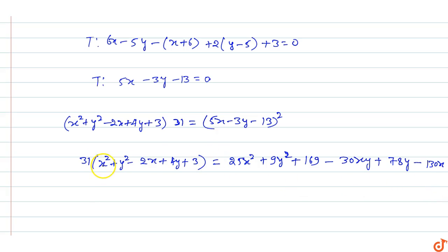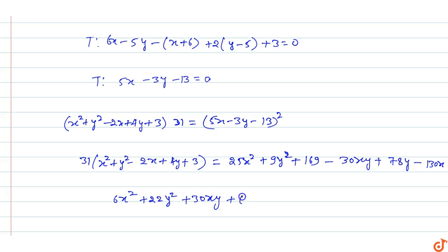Collecting terms: 31x² - 25x² = 6x², 31y² - 9y² = 22y², and for x: -62x + 130x = 68x. For y: 124y - 78y = 46y. Constant: 93 - 169 = -76. And the xy term: +30xy.